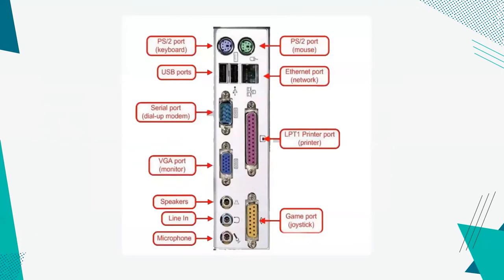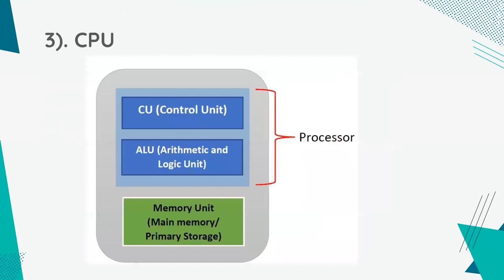You can see the main ports in the back of the CPU. The next main component is the central processing unit, which is the CPU. The CPU consists of two parts, which are the processor and the memory unit. In the processor, there is the CU and the ALU. CU is the control unit and the ALU is the arithmetic and logic unit. In the memory unit, there is the main memory, which is the primary storage.